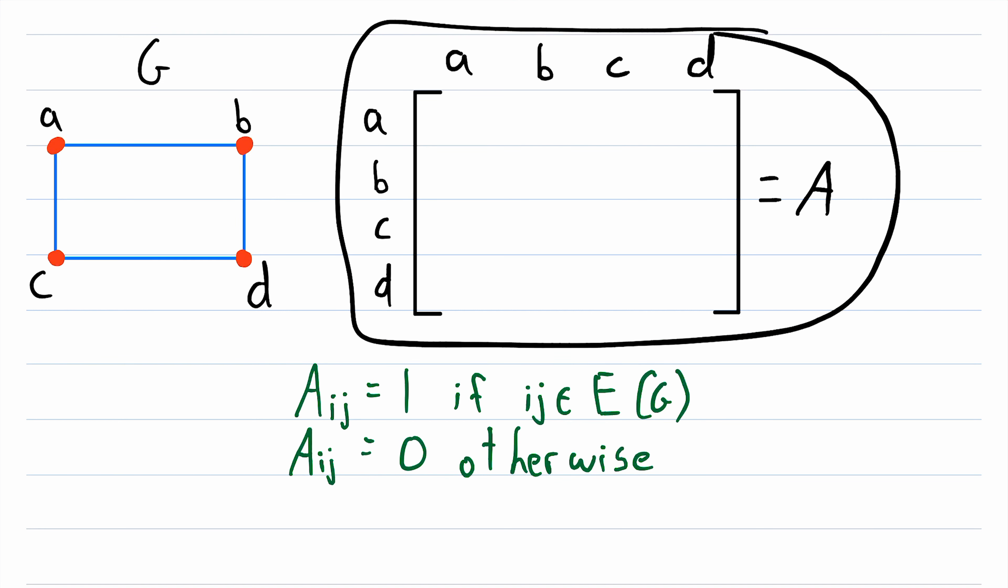So let's go through and fill in this adjacency matrix. First we have row A column A, which is going to be 0, because A is not adjacent to itself. Then row A column B, that's going to be a 1, because we see that A is adjacent to B in the graph G.